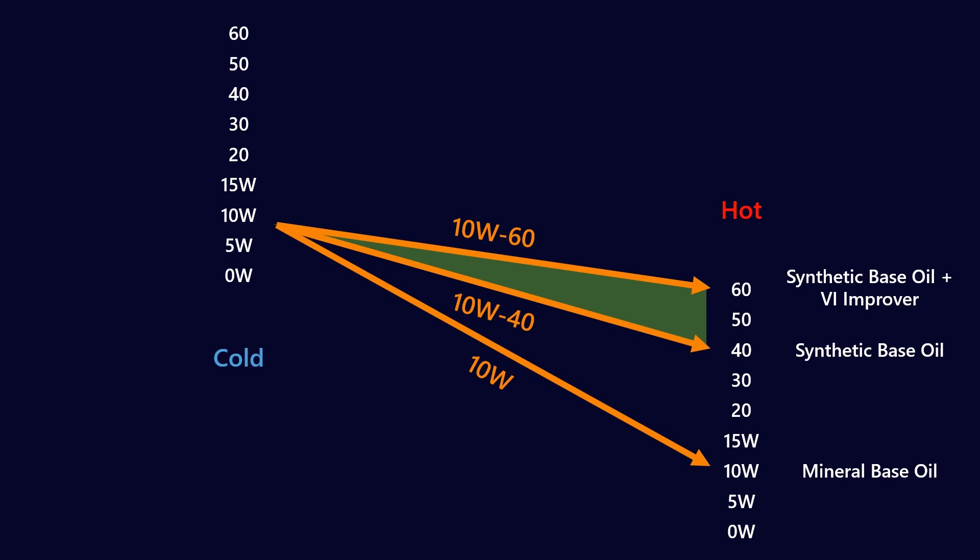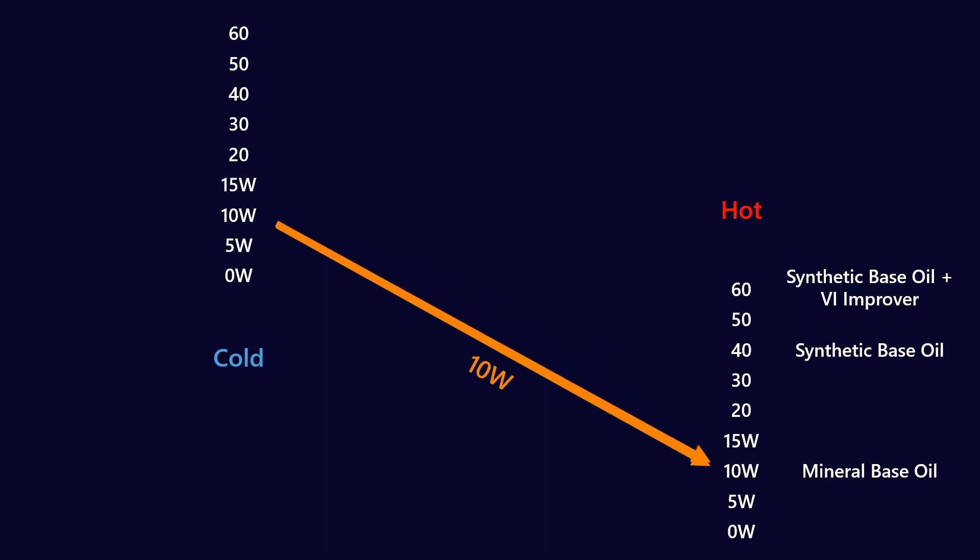But one thing we know about VI improvers, well, we know two things. The first is that VI improvers tend to shear down over time. Now that can be impacted by the quality of the specific VI additive. But over time, they will tend to shear down. So over time, if you have a low stability, shear stability hydraulic oil, that 10W60, when you remove the VI contribution, it will start to look a lot more like a 10W40, or if you had a mineral base oil which was boosted by a huge amount of VI improver, it will start to look like a 10W. So that's why shear stability is so important to the long-term performance of hydraulic oils.